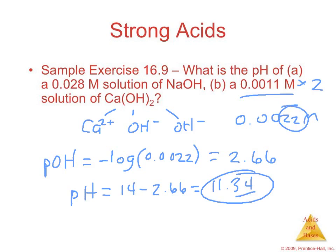And we can even check them against one another and see if they're reasonable. The NaOH, I got a pH of 12.45, which is a more basic pH, but it's a higher concentration of OH-, 0.028, as opposed to 0.0022. So it makes sense that the pH of the calcium hydroxide solution would be a little bit lower, a little less basic than the NaOH. So there's lots of ways you can kind of check yourself to make sure that everything makes sense.